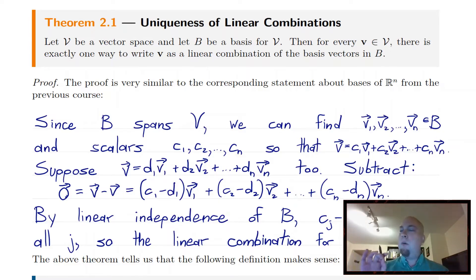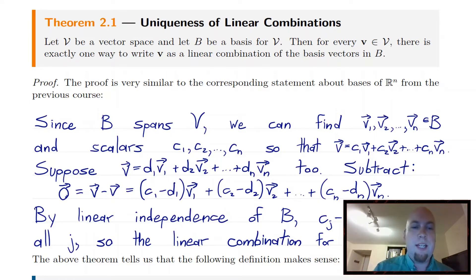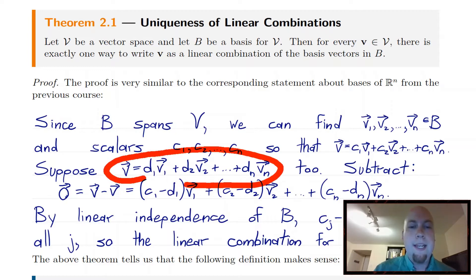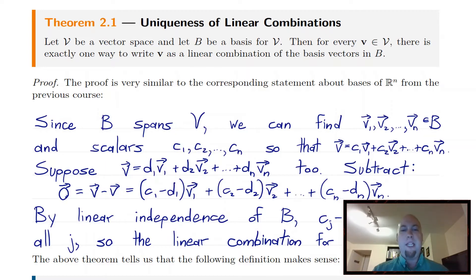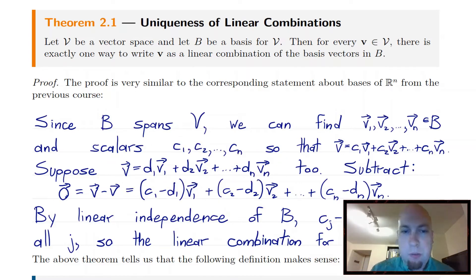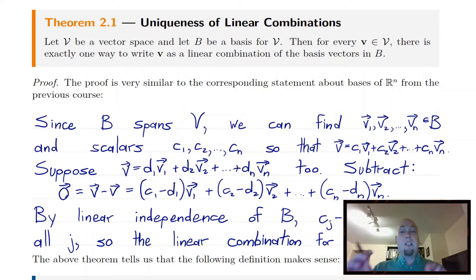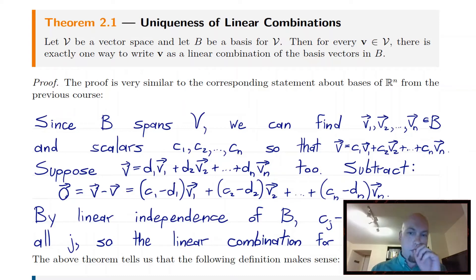Now what we want to do is suppose that there's some other linear combination for v as well — suppose there's some other way to write v as a linear combination of the things in b. We want to come up with a contradiction, or rather show that these coefficients must be the same. We want to show that these d's must be the same as the c's. In other words, we want to show that this linear combination is actually unique — there's only one of them. The way we do that is to use the only other property of bases available to us. We've already used the fact that bases span v, so now we've got to use linear independence.